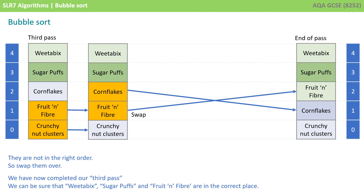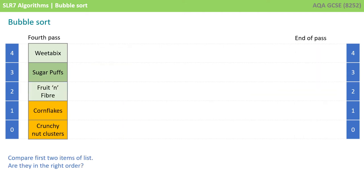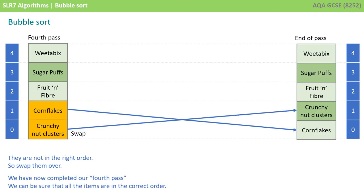We simply repeat our algorithm on the unsorted part of the list. The unsorted part of the list is only the first two items. We compare them just like before and we ask, are they in the right order? They're not in the right order, so we swap them over. We've now completed our fourth pass. We can now be sure that Weetabix, sugar puffs, fruit and fibre, crunch nut clusters and cornflakes are all in the correct order.